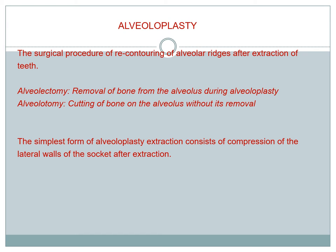First, what do we mean by alveoloplasty? It is the reconditioning of the alveolar ridge after extraction of teeth. There are two types: alveolectomy and alveoloplasty. Alveolectomy means removal of bone from the alveolus during the alveoloplasty procedure — we are cutting it using a bone rongeur or bone file. Alveolotomy means cutting of the bone of the alveolus but not removing it from the extraction area.